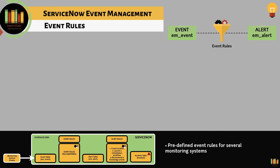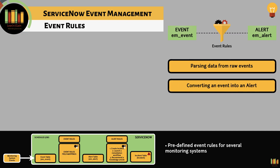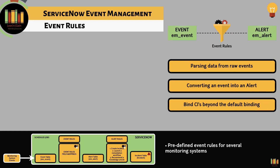Event Rules assist with parsing data from ROI events, converting an event into an alert, and binding CIs beyond the default binding to the node.